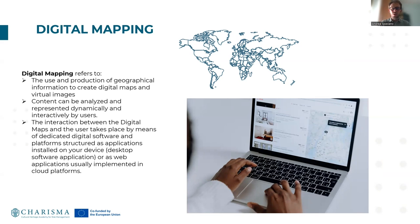GIS refers to the use and production of geographical information to create digital maps and virtual images. Content can be analyzed and represented dynamically and interactively by the user. The interaction between digital maps and the user takes place by means of dedicated digital software and platforms structured as desktop software applications or as web applications usually implemented in cloud platforms.